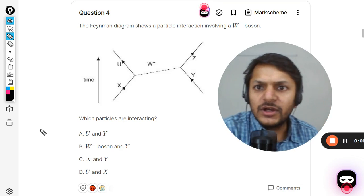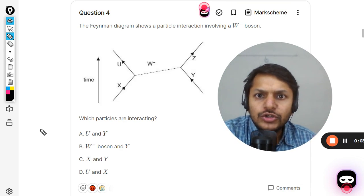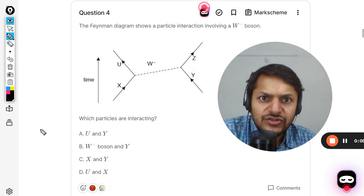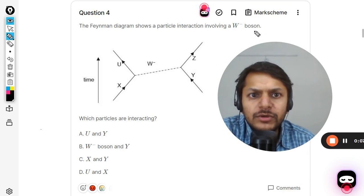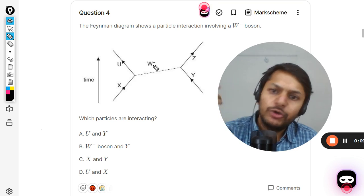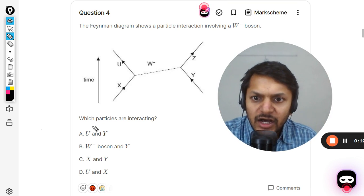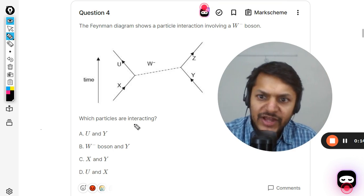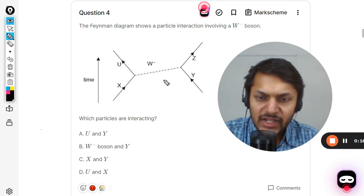Dear students, let us see what is there in this question. The Feynman diagram shows a particle interaction involving a W negative boson. This is a W negative boson which is getting liberated. Which particles are interacting?